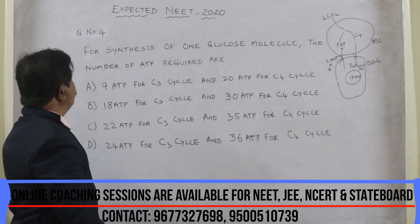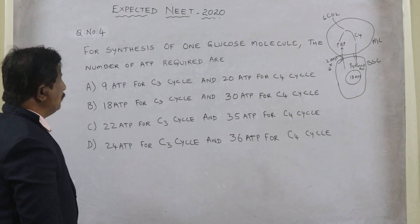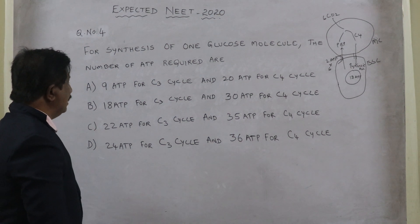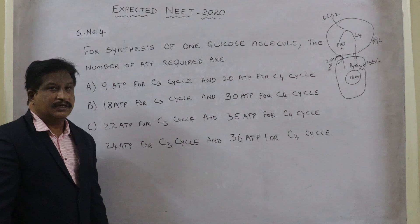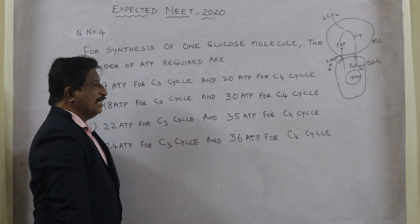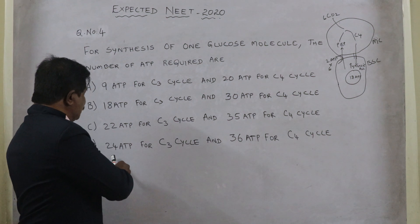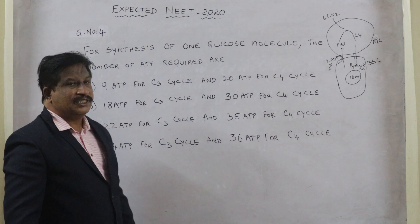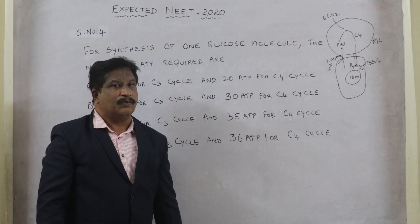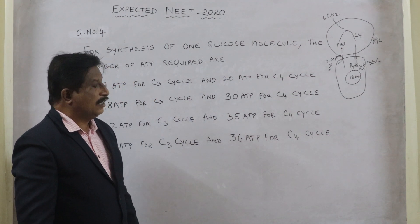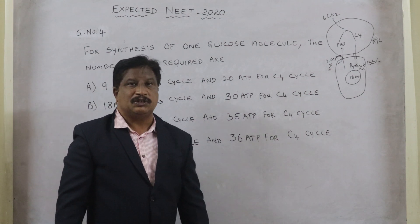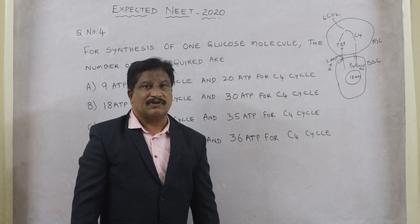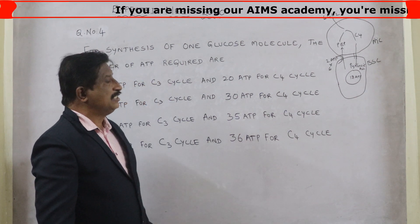Question number four: for synthesis of one glucose molecule, the number of ATPs required — options are 9 & 20, 18 & 30, 22 & 35, or 24 & 36 ATPs for C3 and C4 cycles respectively. In C3 plants, the C3 cycle requires a total of 18 ATPs: 12 ATPs during the reduction step and 6 ATPs for regeneration of RuBP.